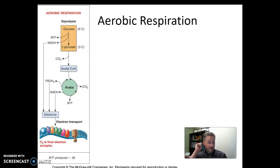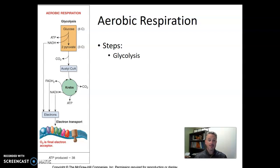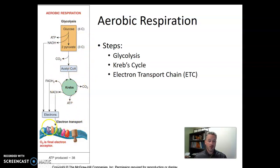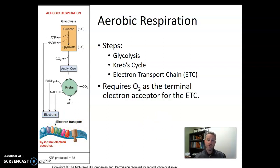To discuss the different processes, I want to rely on these images from a textbook — they do a particularly good job of setting up the comparison. Aerobic respiration involves several steps. We've learned the details of those steps like glycolysis, the Krebs cycle, and the electron transport chain or ETC. Aerobic respiration requires oxygen, and oxygen's role is that it is the terminal electron acceptor for the electron transport chain.